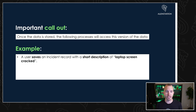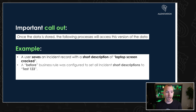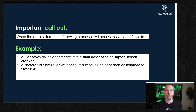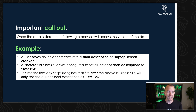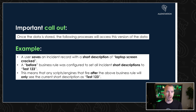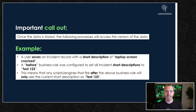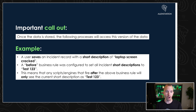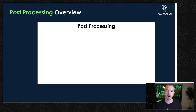For example, a user saves an incident record with a short description of 'laptop screen is cracked.' A before business rule was configured to set all incident short descriptions to 'test one two three.' This means any scripts and engines that fire after this business rule will only see the short description as 'test one two three.' It's not going to see anything about 'laptop screen' anymore — it's gone.